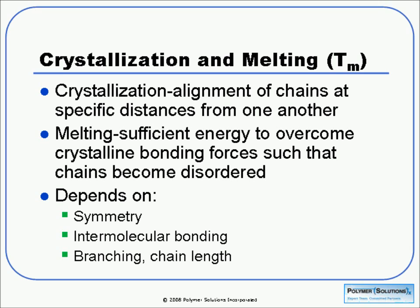The other main transition, present only in semi-crystalline systems, is the melting point, and that goes hand in hand with crystallization. Crystallization is when you have an ordered structure with a specific distance between chains. When you put in sufficient energy to overcome those bonding forces, you have melting — the chains become disordered and your sample will flow. Where that temperature occurs depends on factors similar to Tg: symmetry, intermolecular or hydrogen bonding, branching, and chain length or molecular weight.